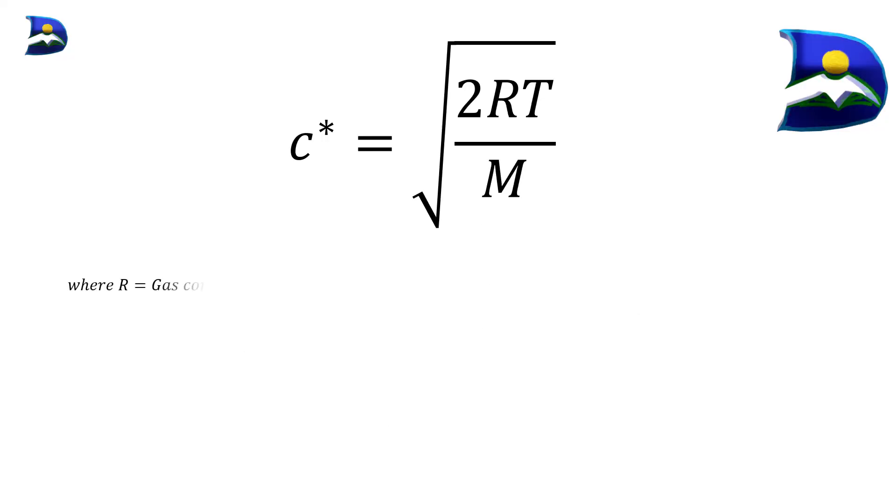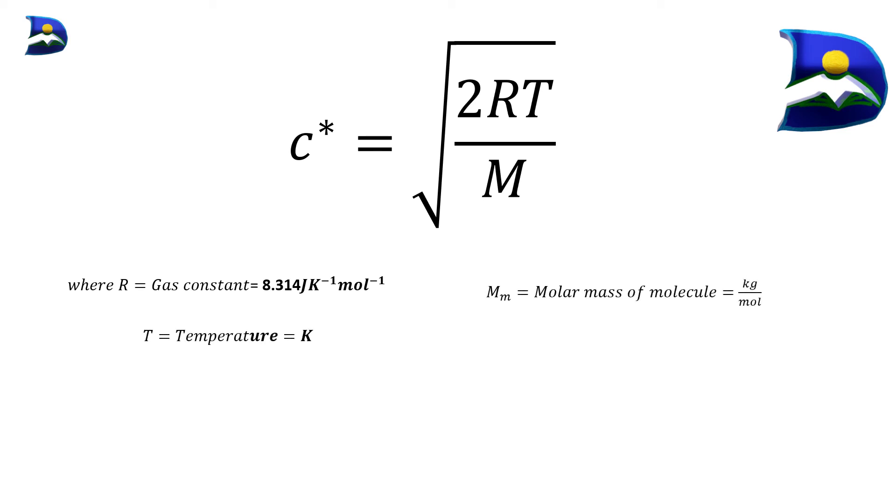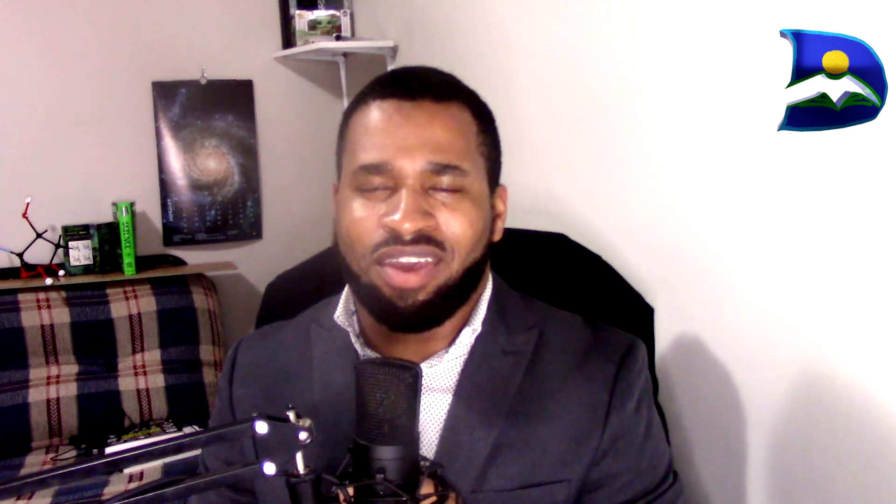The root mean squared speed of nitrogen gas, determined in an earlier video, is the highest value compared to the mean speed and the most probable speed. That's it for this video — I hope you understand the concept of most probable speed, how it is placed at the maximum of the distribution curve, how to derive the formula, and how to apply it to nitrogen gas. Please hit the comments below, let me hear your thoughts, talk to you soon — stay smart and believe in yourselves.